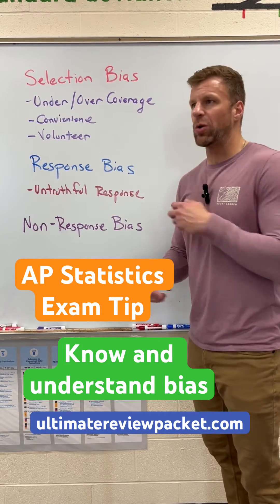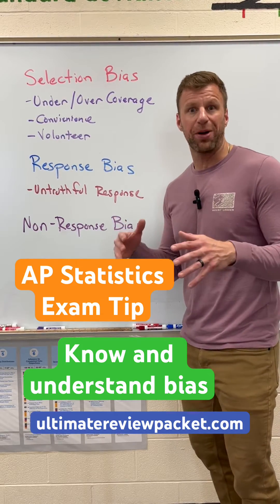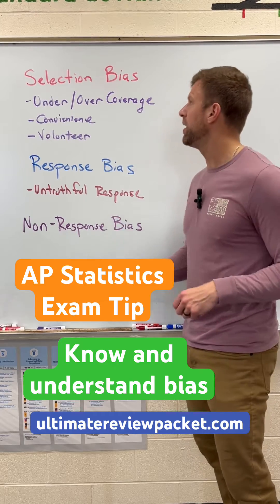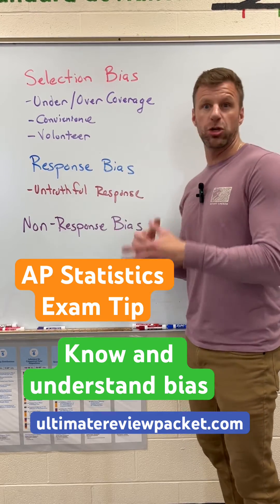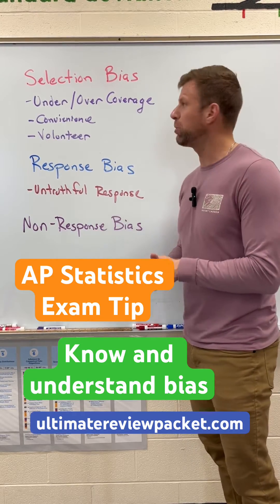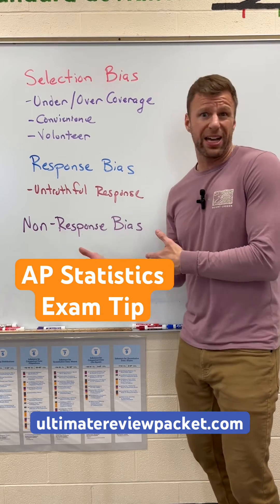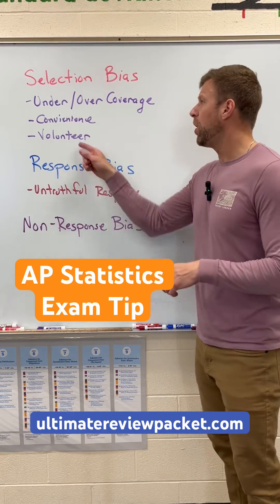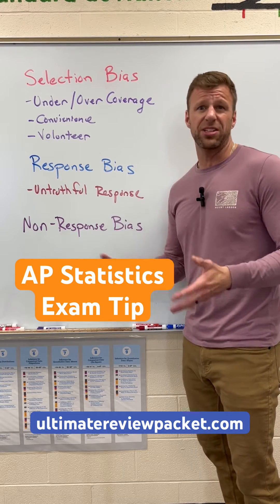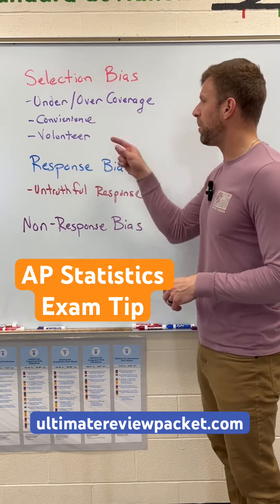We have selection bias, where anything about your selection process is simply not random. It could be because you purposely under or over covered your group, it could be a pure convenience sample, or it could be using volunteers — none of which lead to a random sample. So those are all bad.